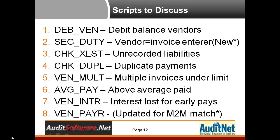As to the actual scripts we're discussing today: the first one looks for vendors that are actually in a receivable position — where they owe you money. These are debit balance vendors, and we'll summarize and extract items where the vendor has a negative balance.